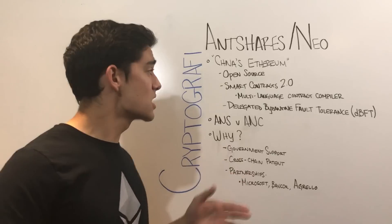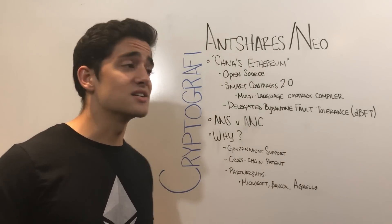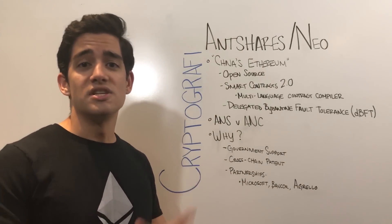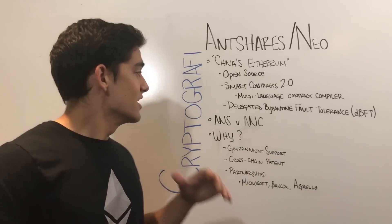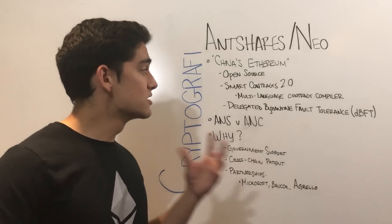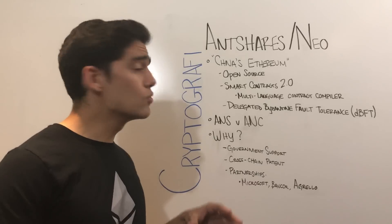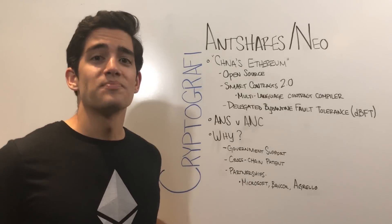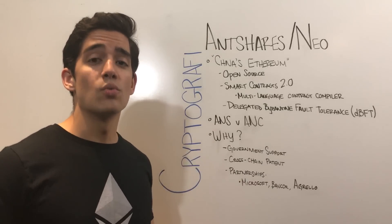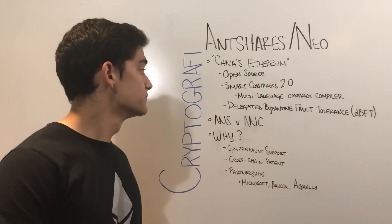And that sounds complicated, but all it actually means is that it doesn't matter if you write in Java, .NET, or C-sharp — it'll translate all of that into their own native smart contract language. Which means that NEO, right off the bat, has access to the world's developers without them having to learn anything new, which is really important.